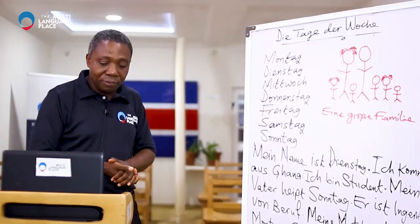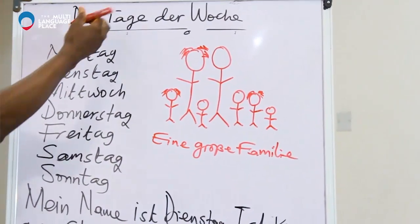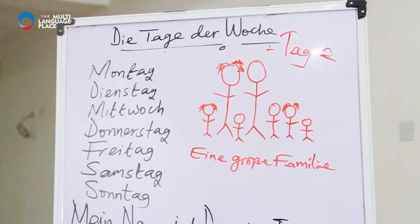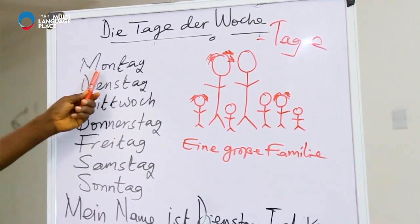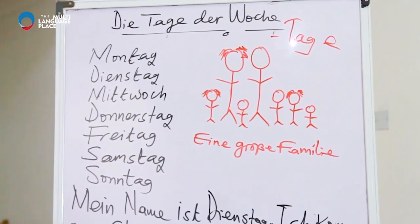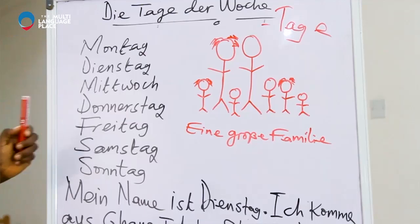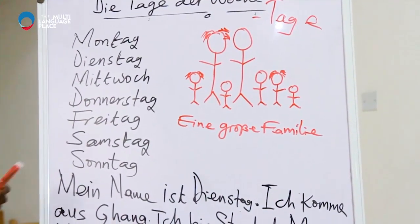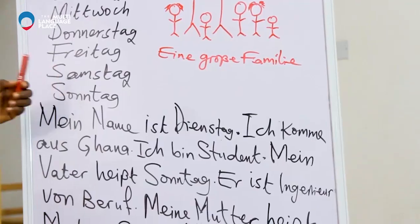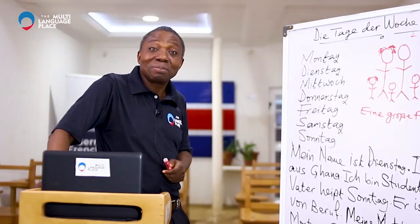The topic is the days of the week. Remember the article 'der' — the day. So once again: Montag, Montag, Dienstag, Mittwoch, Donnerstag, Freitag, Freitag, Samstag, Samstag, Sonntag. Montag means Monday.